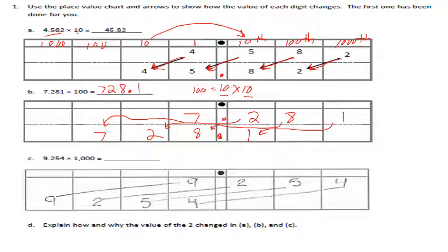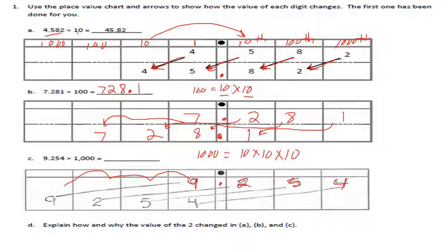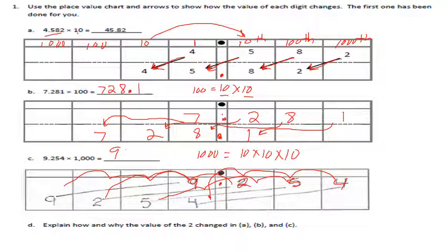So seven and two hundred eighty-one thousandths times 100 equals seven hundred twenty-eight and one tenth. Then the last one shows nine and two hundred fifty-four thousandths multiplied by one thousand. One thousand equals ten times ten times ten — three place values. So the nine, two, five, and four each move three place values, giving us nine thousand two hundred fifty-four.